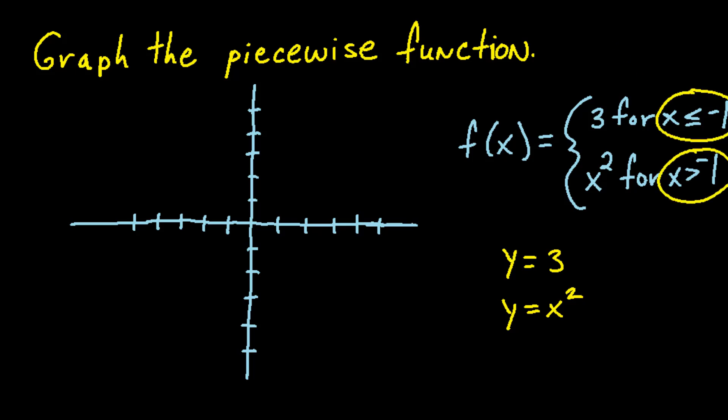The top equation stands for the function y equals 3, which is the horizontal line through 3 on the y-axis. But we only want to graph the portion of that line for which x is less than or equal to negative 1. So we want to start here. The solid circle means that x can equal negative 1, and then we want to graph this to the left. This graph shows all the values of y equals 3 for when x is less than or equal to negative 1.